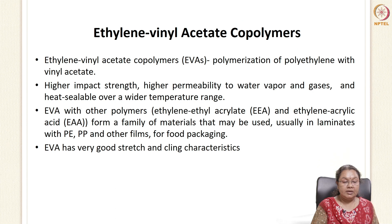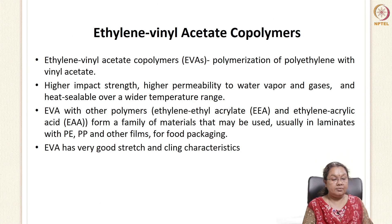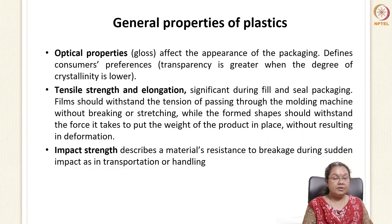EVA is generally used as laminates with polyethylene, polypropylene, and other films in food packaging. EVA also has very good stretch and clinging properties, so it can be used as a secondary packaging material. This is the structure of EVA — ethylene and vinyl acetate polymerize together to give ethylene vinyl acetate.